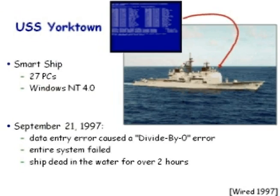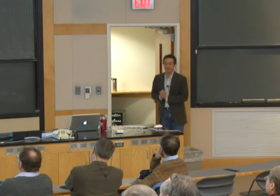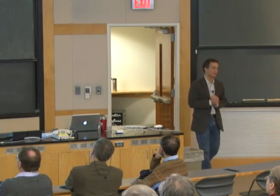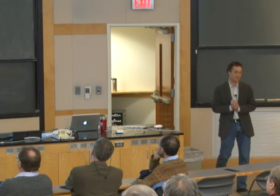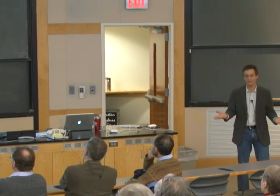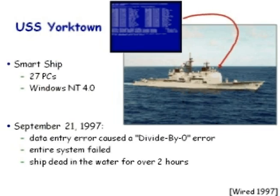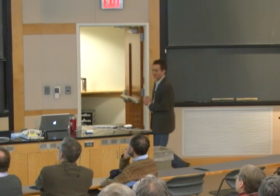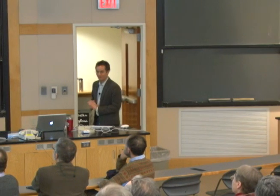Here's a more frightening one. This is the USS Yorktown, one of the first smart ships in the U.S. Navy. The entire ship was controlled by a network of 27 PCs running Windows. One day an operator entered some data incorrectly, which led to a divide-by-zero error — that's like crashing into a wall, it crashed the program. The ship was dead in the water for two hours while they tried to diagnose and fix the problem.